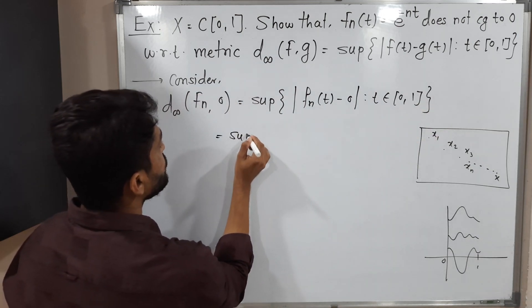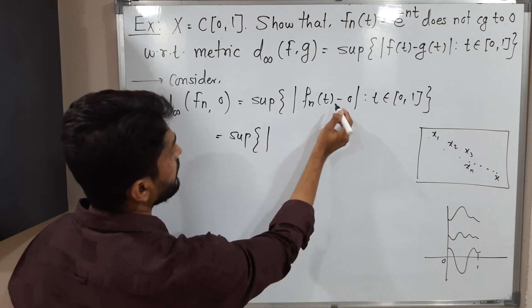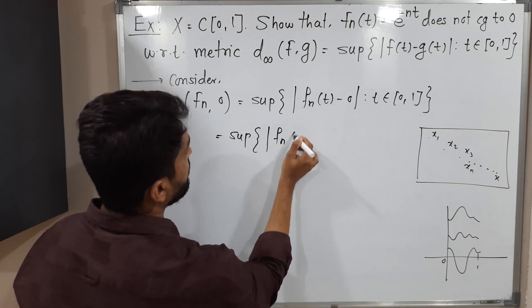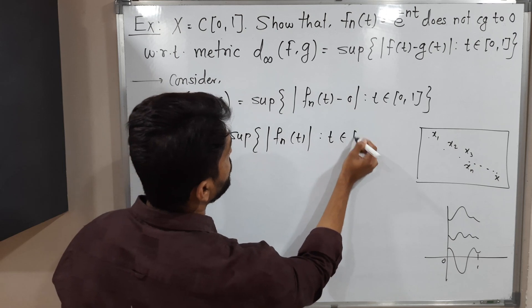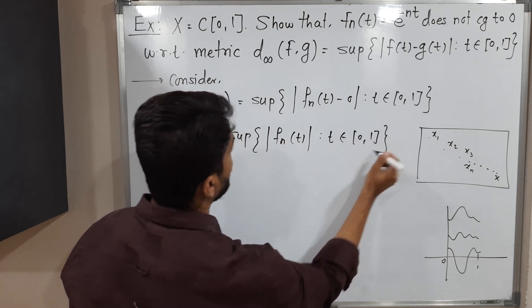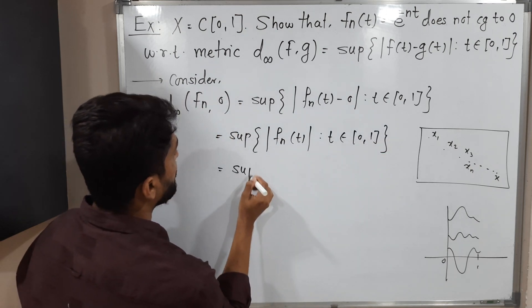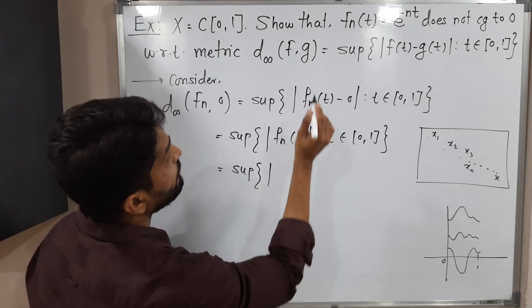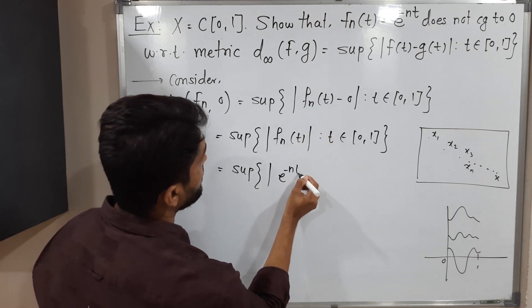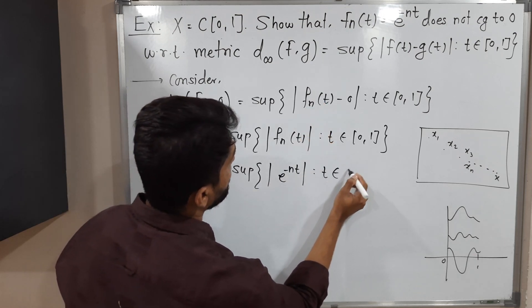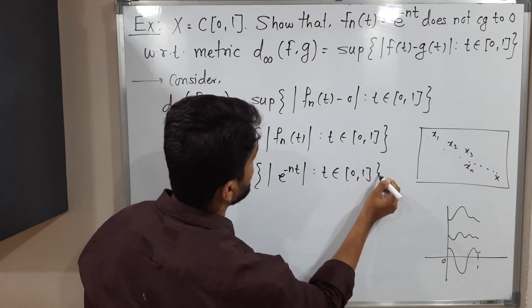So this is equal to supremum of |Fn(t)|, t belongs to closed interval [0, 1]. So this is equal to supremum of, what is Fn(t)? It is e^(-nt), t belongs to closed interval [0, 1].